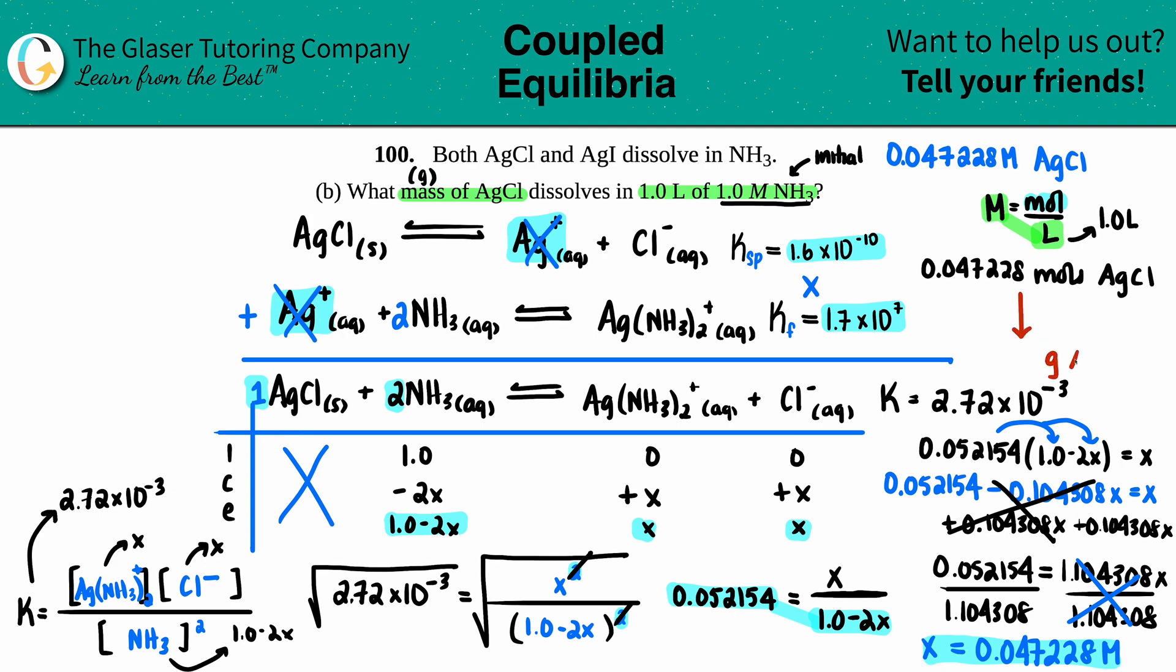They want mass, so we go to grams of AgCl. Moles to grams, that's the periodic table—we multiply by the molar mass. I got to find the molar mass of AgCl: 107.9 plus 35.45. We multiply that number by 143.35. Two sig figs, so I get 6.8 grams of AgCl.